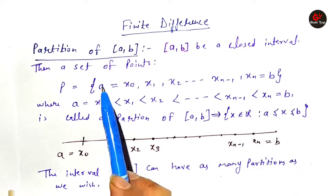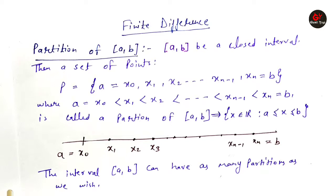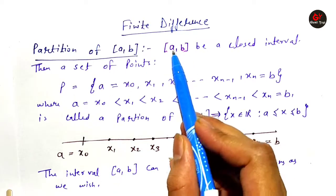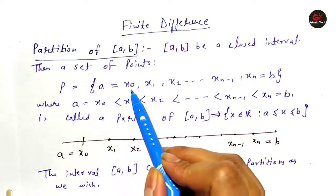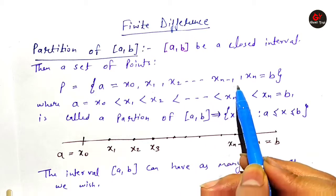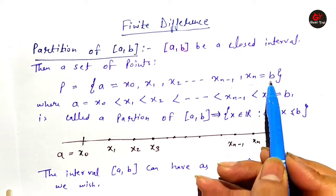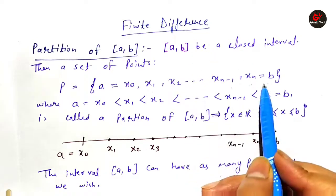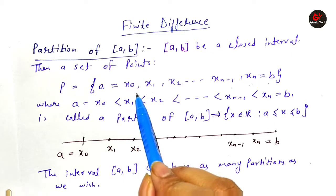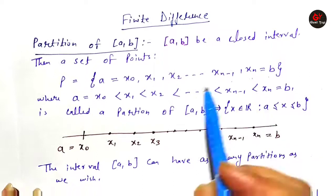A-B is a closed interval, then a set of points. We have written closed interval A-B. I took the left-hand side point A as the initial point X0, then X1, X2, and so on up to Xn-1, Xn. Xn we have taken as B, which was the right-hand part. So this partition is represented as A equal to X0, where A is the initial point, and B equal to Xn is the end point.